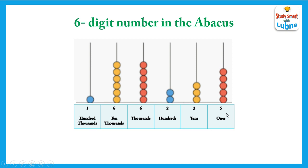So the place value of five is five. The place value of three is thirty. The place value of two is two hundred. Six is six thousand. Another six is sixty thousand. And the place value of one is one hundred thousands.